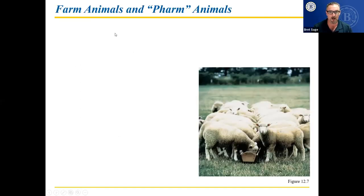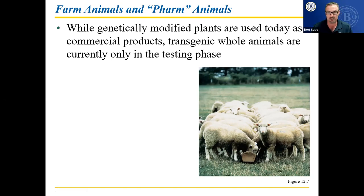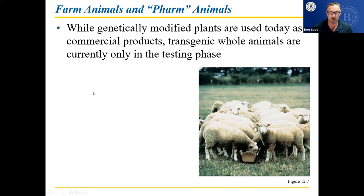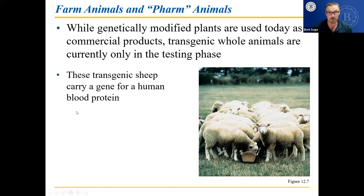Farm animals — look at the word 'farm' as in pharmacy. While genetically modified plants are used today in commercial products, transgenic whole animals are currently only in the testing phase. Genetically modified cattle, pigs, and sheep are not really part of our food supply. The FDA is still not ready to have them part of our food supply.